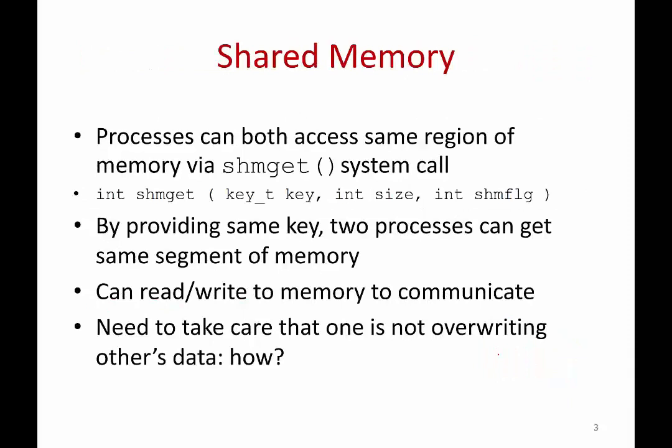The first mechanism is what is called shared memory. Two processes can both get access to the same region of memory. Both of them call the system call shared memory get and this returns a pointer to a memory area. Both processes can access the same memory area — one process can put some information in that memory area, the other process can read it. This is the simplest way in which two processes can communicate with each other.